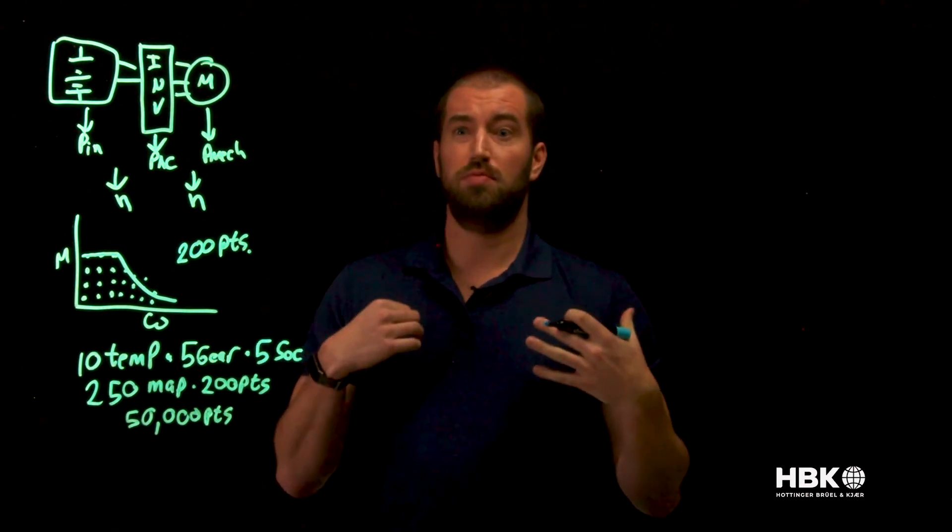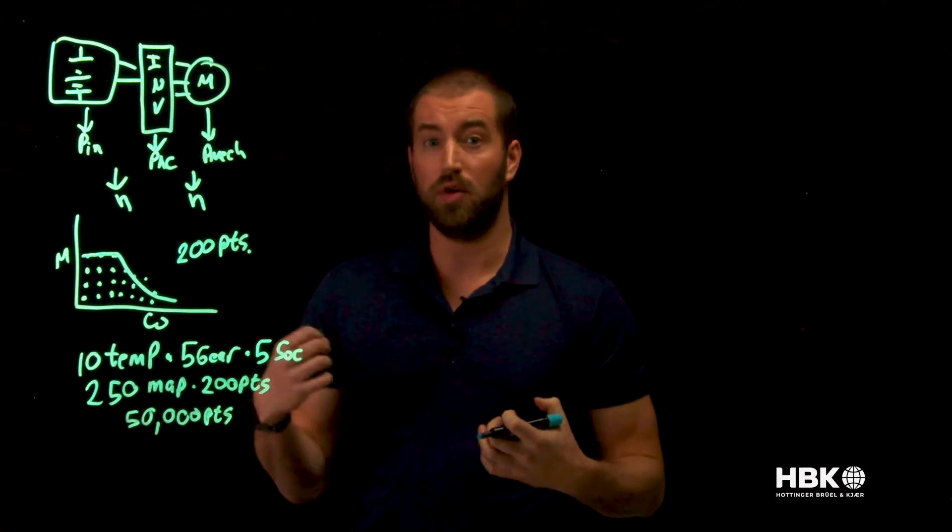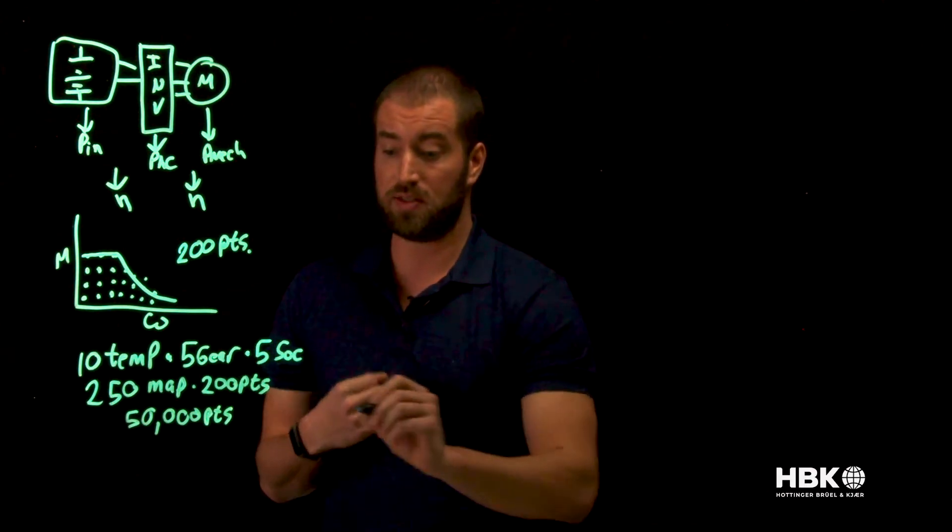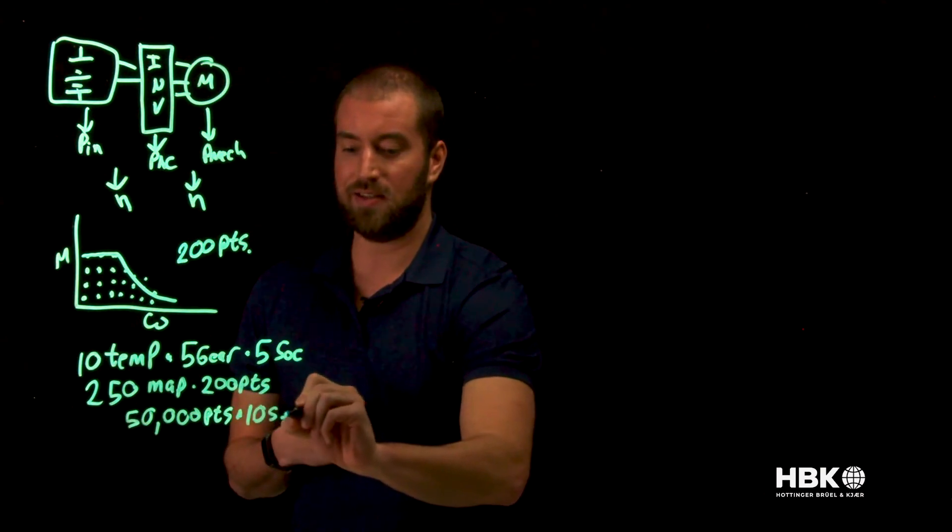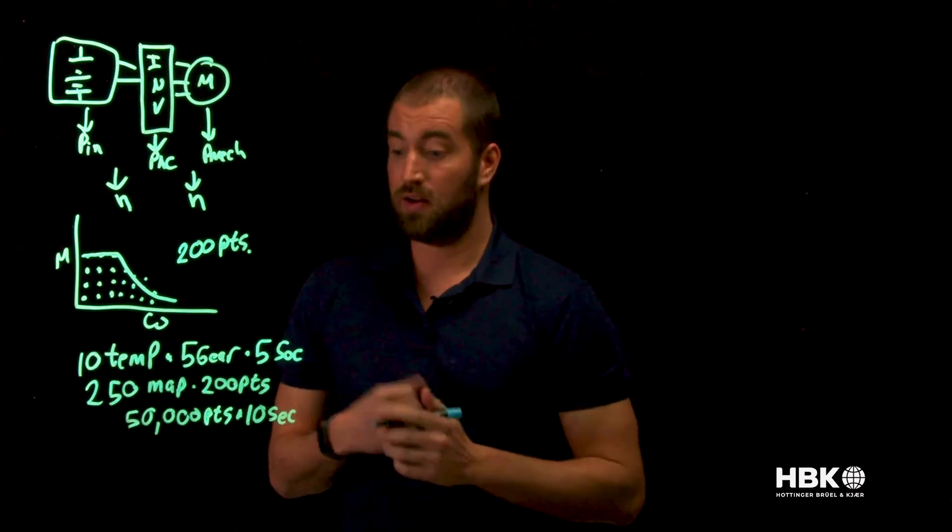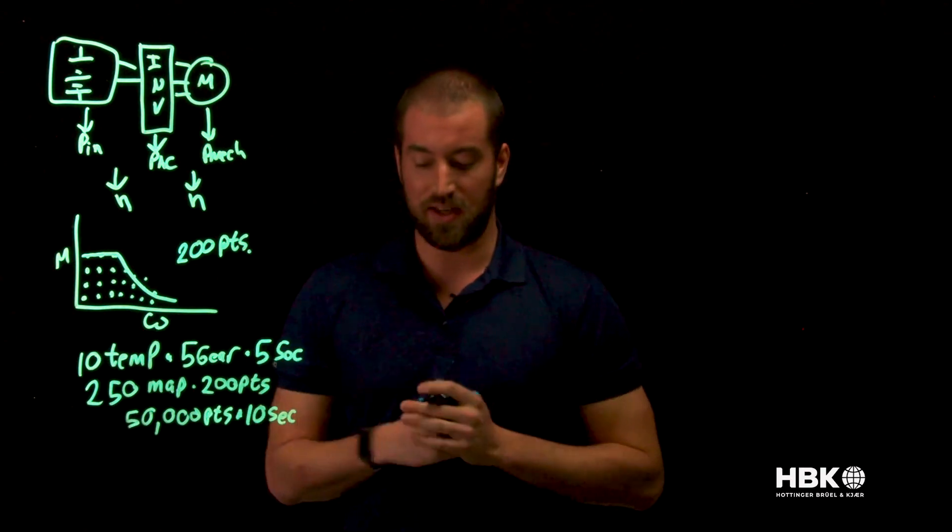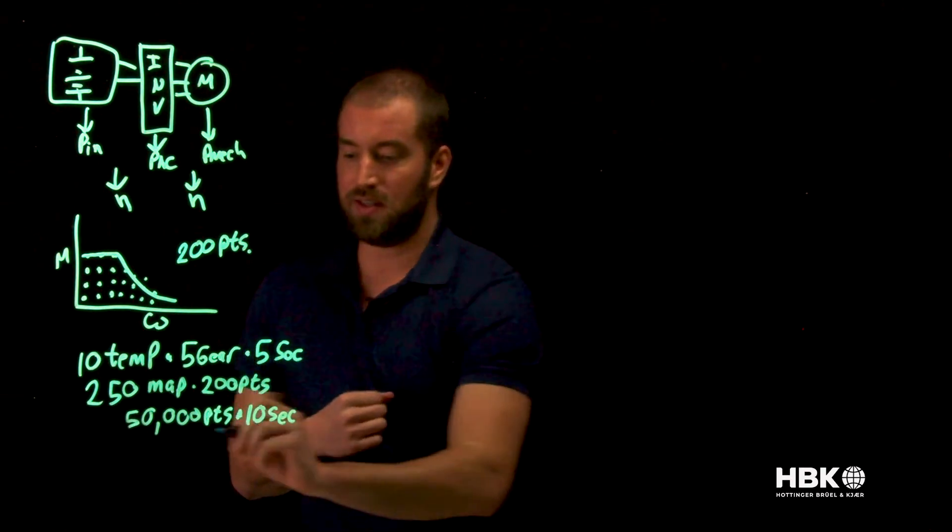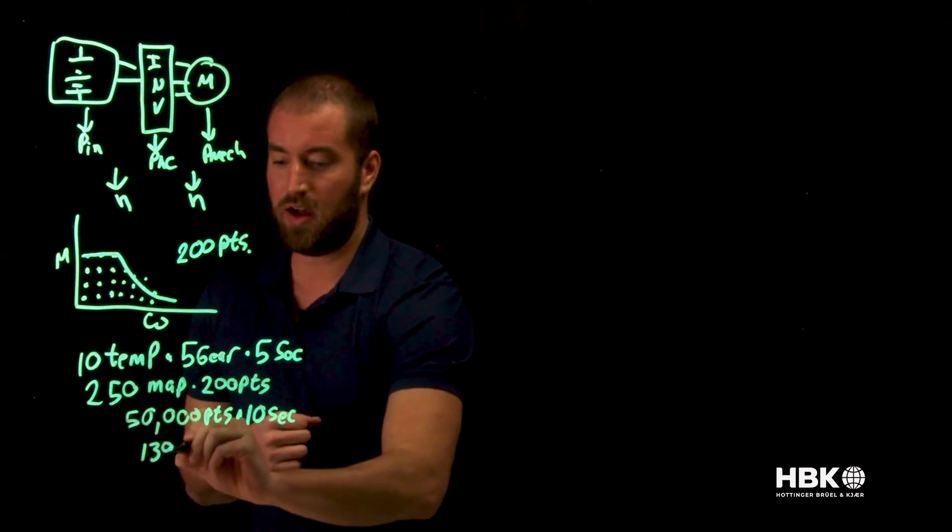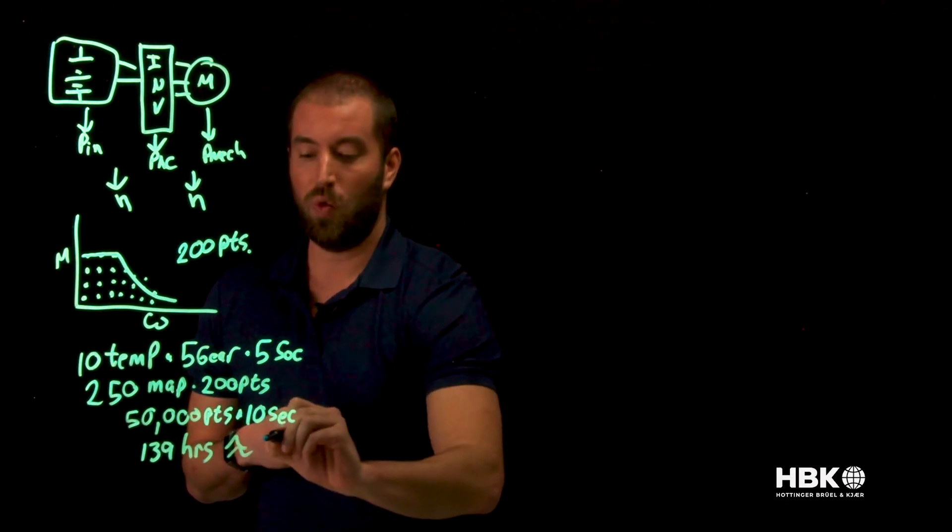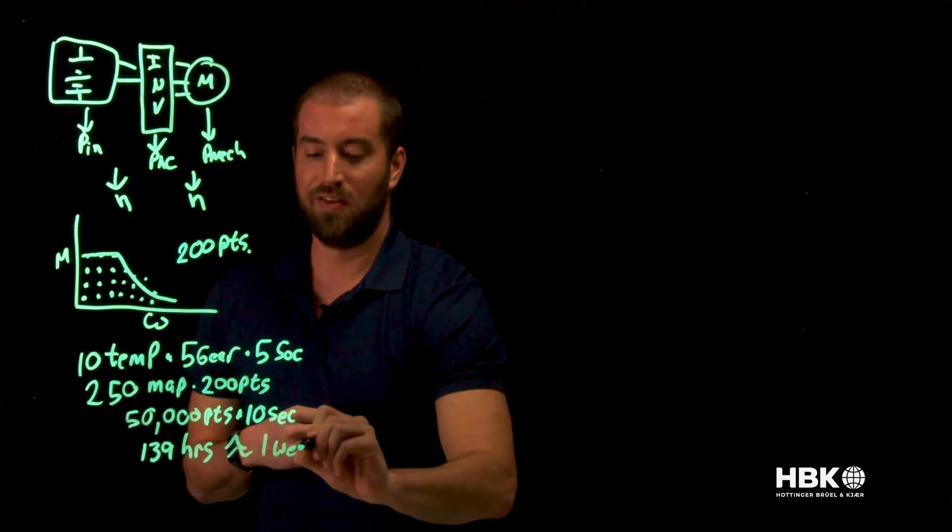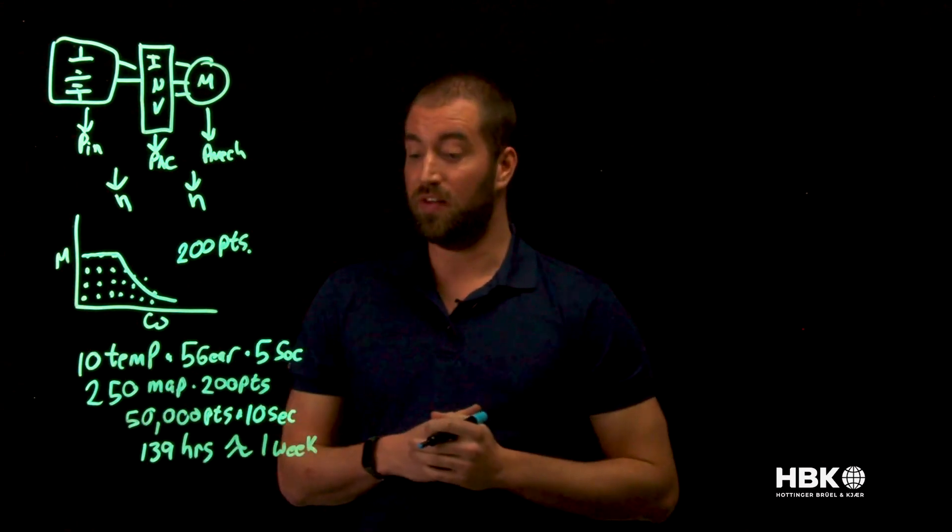Now let's consider with power analyzers that were intended for the grid, you know 50, 60 hertz fixed. Each one of these set points is potentially going to take 10 seconds because they need to settle on it. That's 500,000 seconds. 500,000 seconds is equivalent to 139 hours, which is approximately one working week if we consider a working week to be five days.